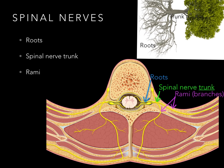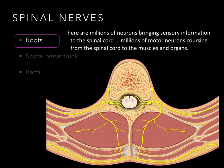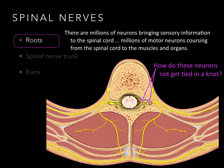So there we have the root, spinal nerve trunk, and the rami. First, let's take a look at the roots. There are millions of neurons bringing sensory information to the spinal cord, and there are millions of motor neurons coursing from the spinal cord to all the muscles and the organs. So it begs the question: how do these neurons not get tied in a knot?